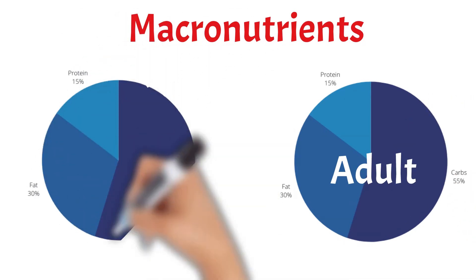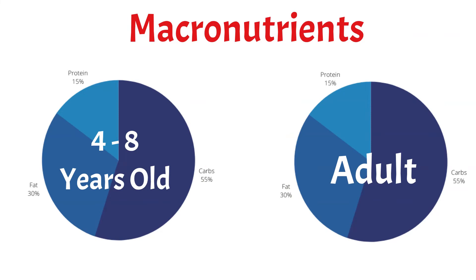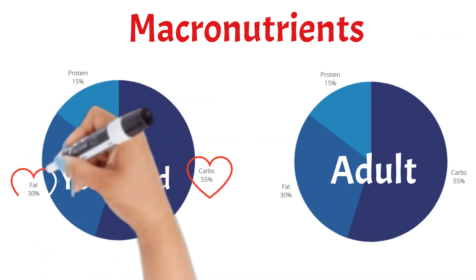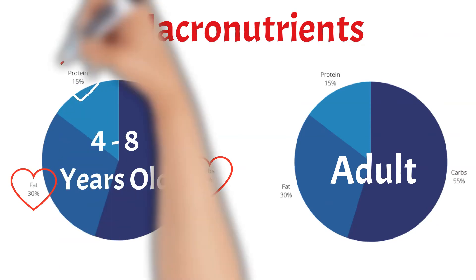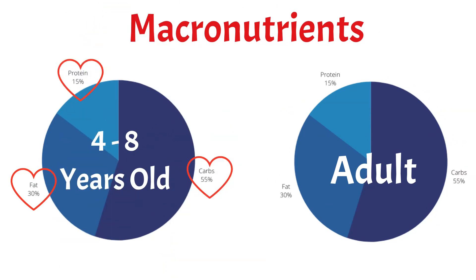Remember that carbs are the brain's primary source of fuel, and that low-carb diets are not suggested for school-aged children. Fats support brain development and are needed to absorb vitamins A, D, E, and K. And protein is needed for proper growth and development, which is especially true at this age.